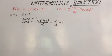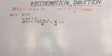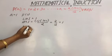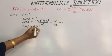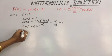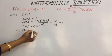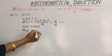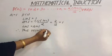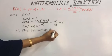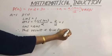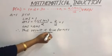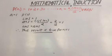If you observe, the LHS value is 1 and the RHS value is also 1. So LHS equals RHS. Therefore, the result is true for n equal to 1. This completes the first step of mathematical induction.